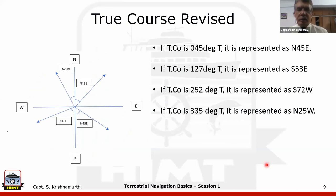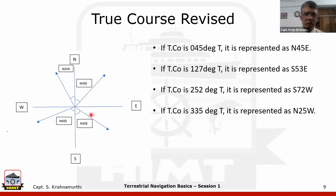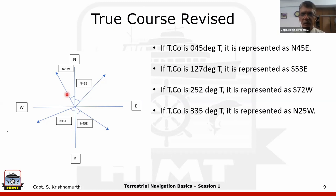Let's quickly revise true course. We covered the conversion of three-figure notation into quadrantal representation. For example: 045 is written as N45E, 127 is S53E, 252 degrees is S72W, and 335 degrees is N25W. This quadrantal representation is needed to use traverse tables to solve plane sailing numericals.